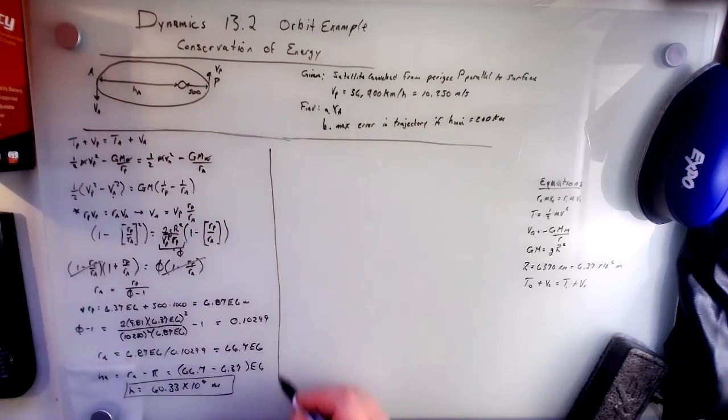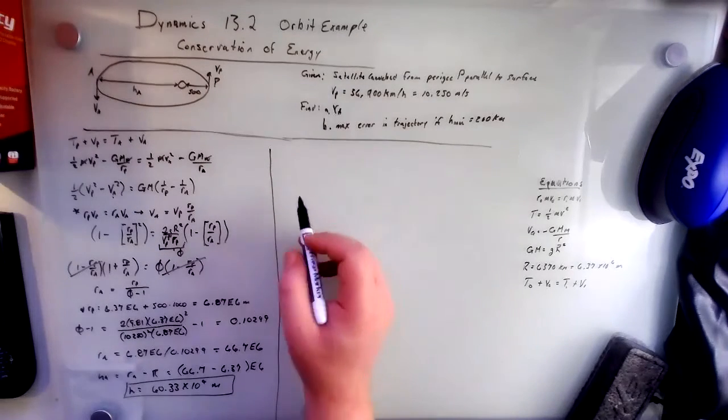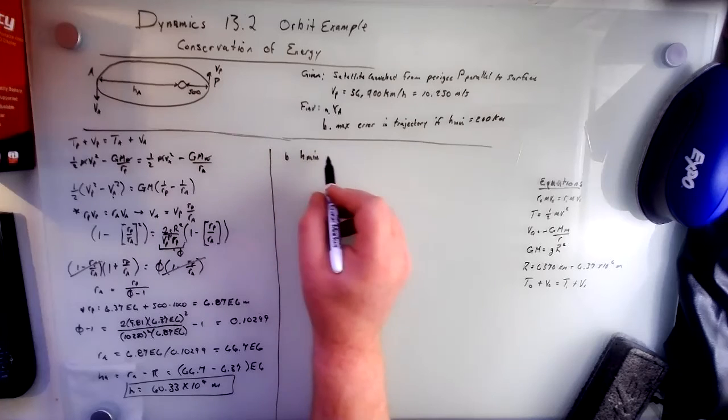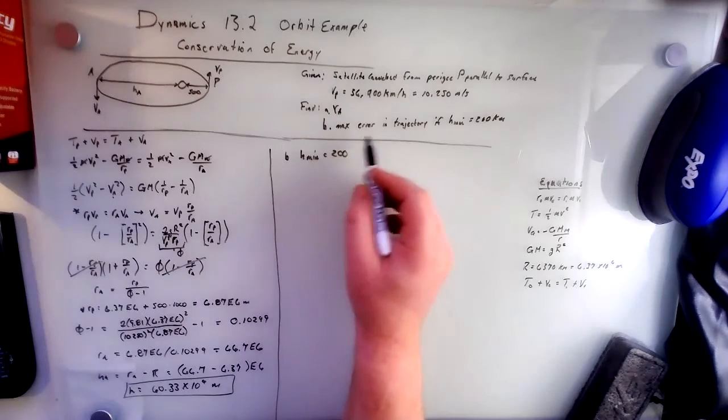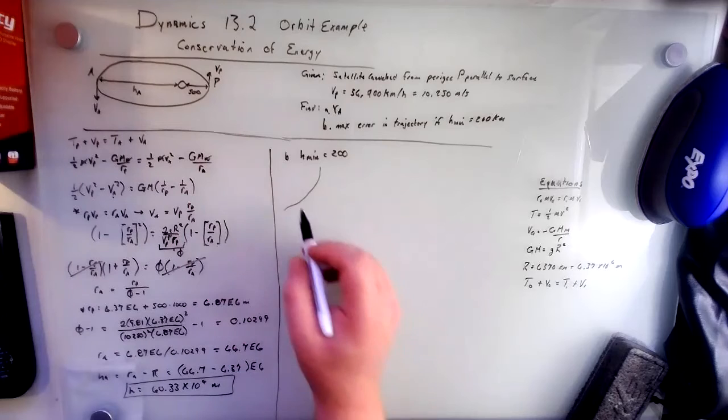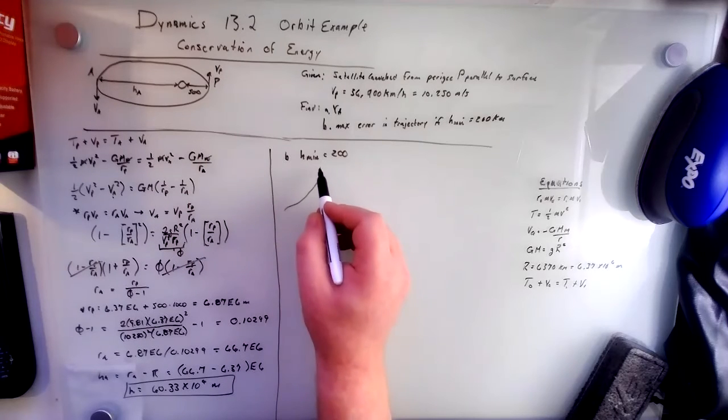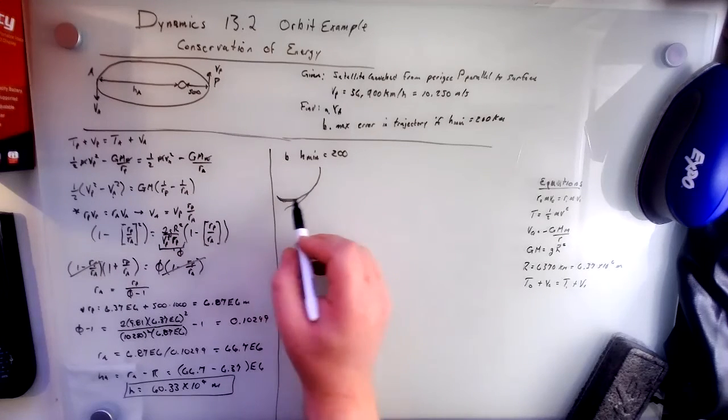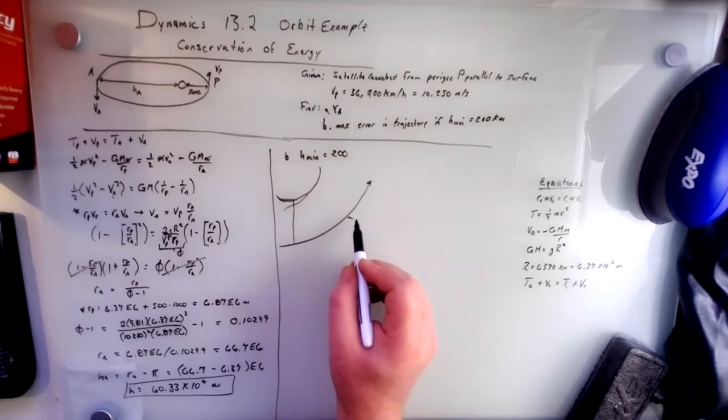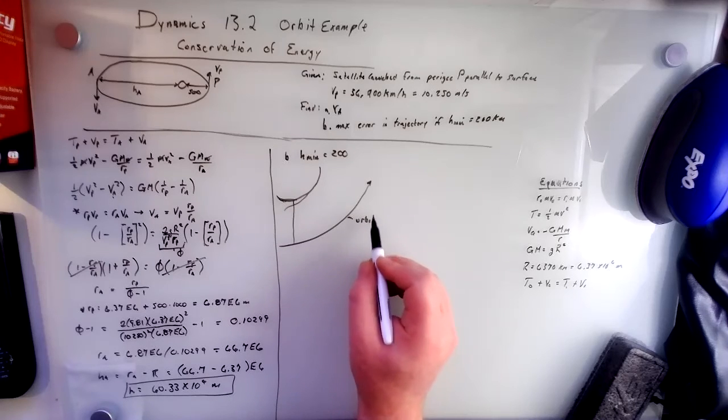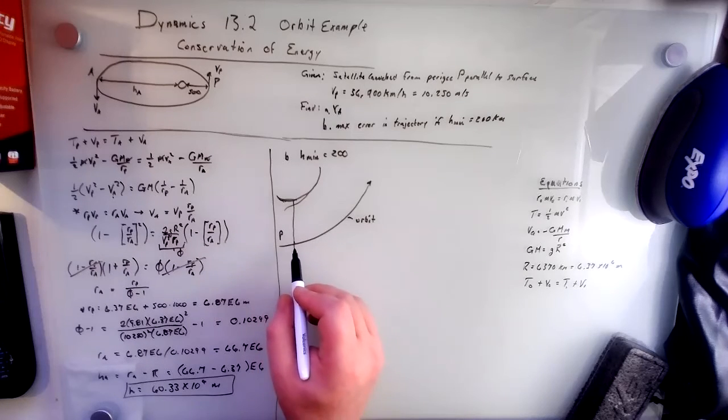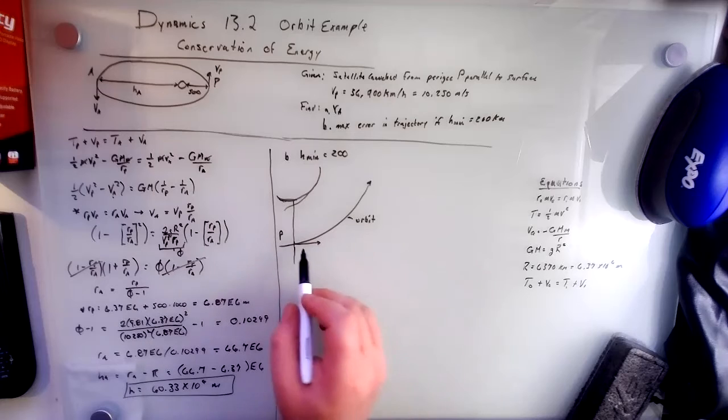Alright, so for part B, they want us to find the max error in trajectory. And so here, we'll say H min equals 200. And we want the max error in trajectory. So that's going to be an angle. And so the schematic of this looks like this. If this is our planet there, then going to point P, this is our orbit, orbit trajectory.